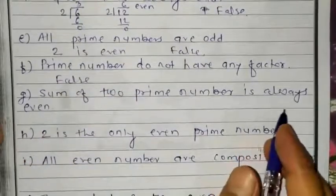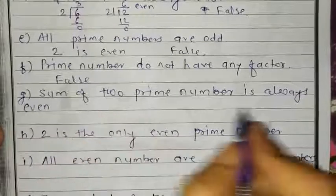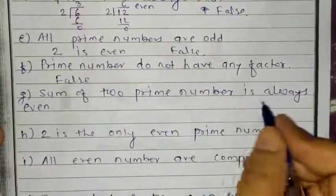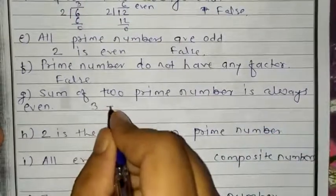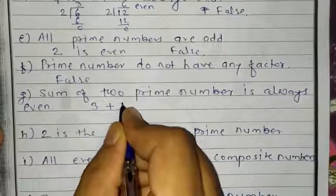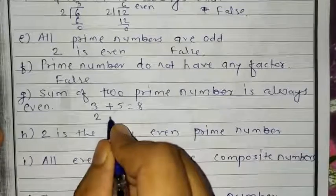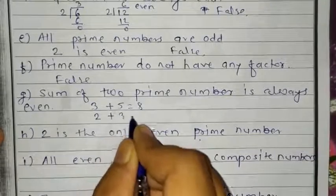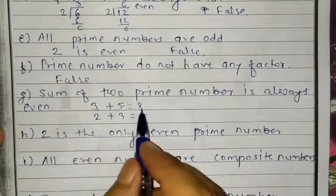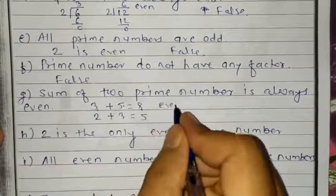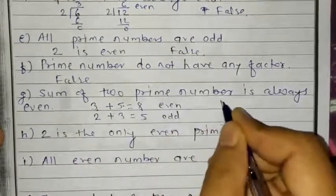Part G: sum of 2 prime numbers is always even. The important thing here is the word 'always.' Suppose you take prime numbers 3 and 5: 5 plus 3 is 8, which is even. But if you include 2 — taking 2 and 3, their sum is 5, which is odd. So it is not always even. Therefore it is false.